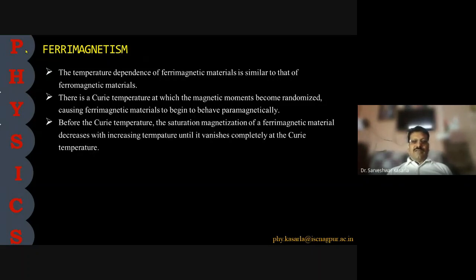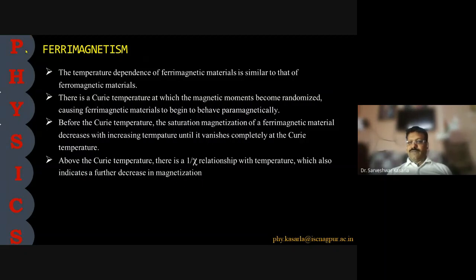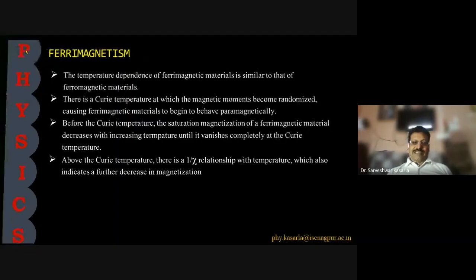Before the Curie temperature, the saturation magnetization of ferrimagnetic material decreases with increasing temperature until it vanishes completely at the Curie temperature. Above the Curie temperature, there is a 1/ψ relationship with temperature, which also indicates a further decrease in magnetization.